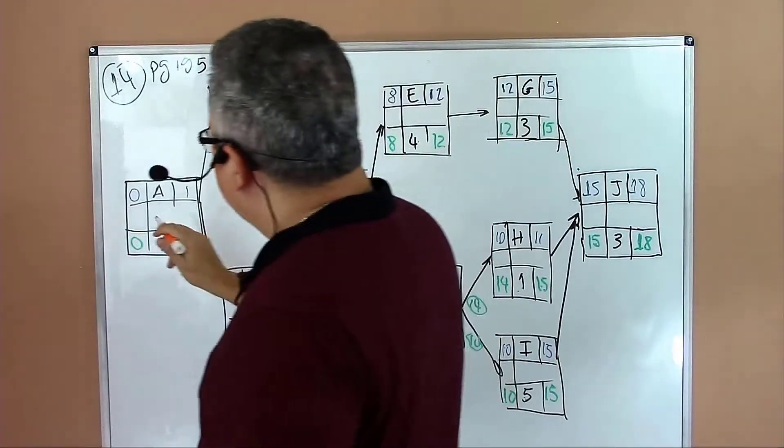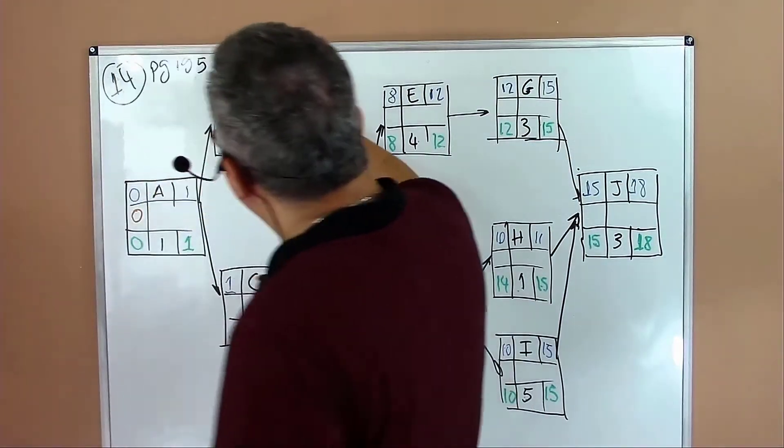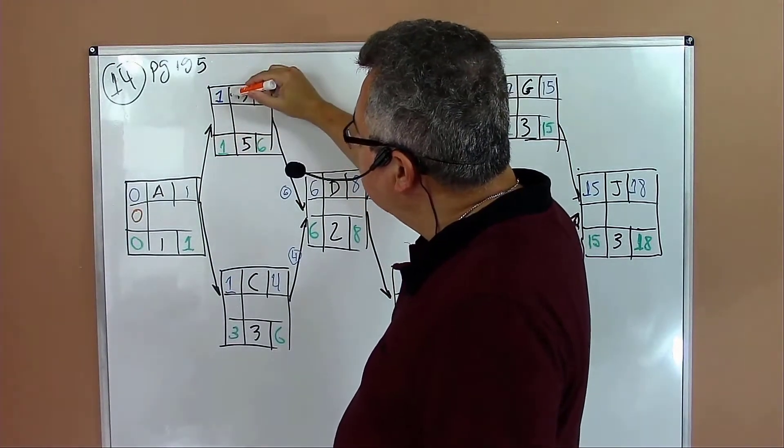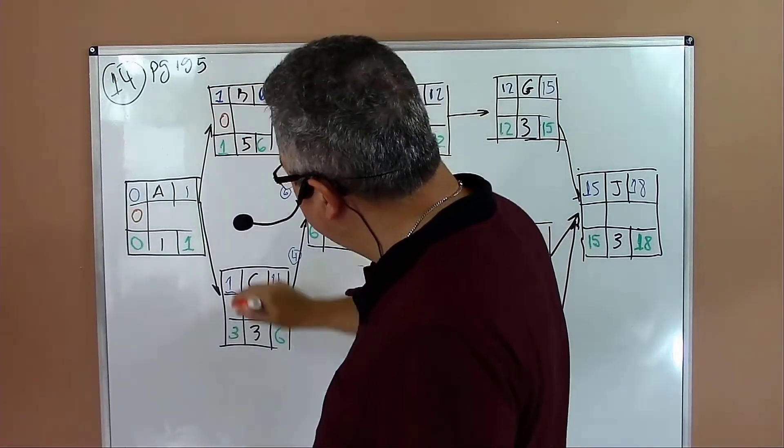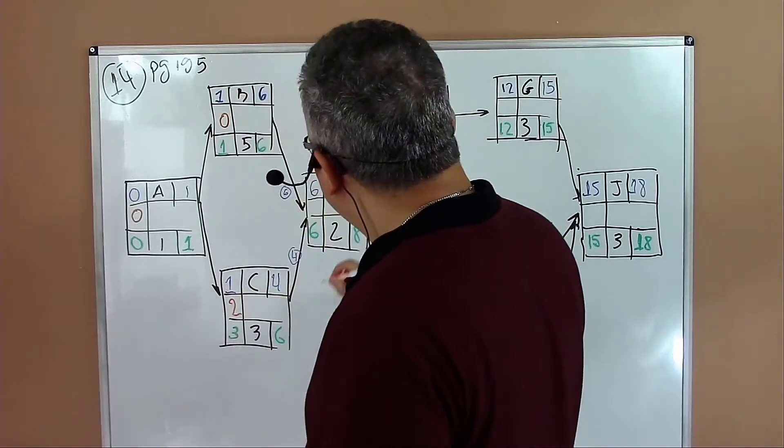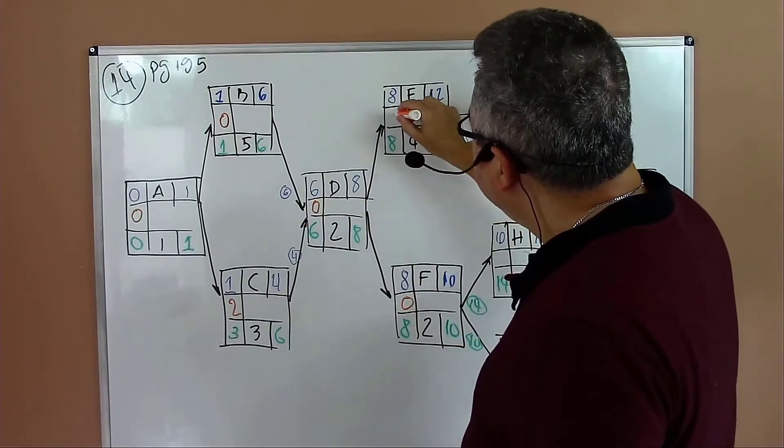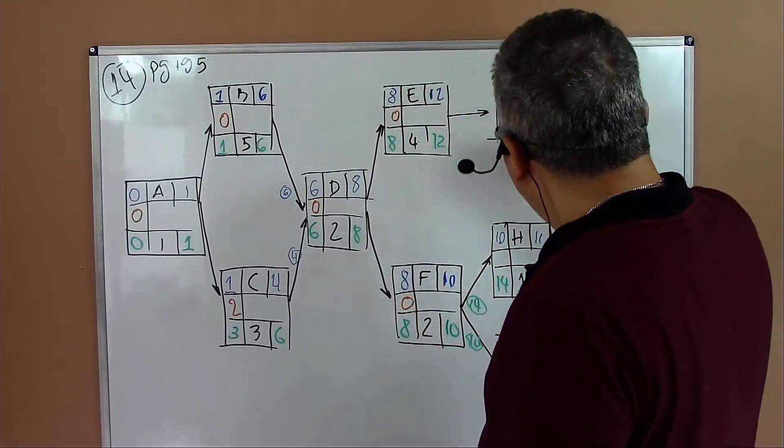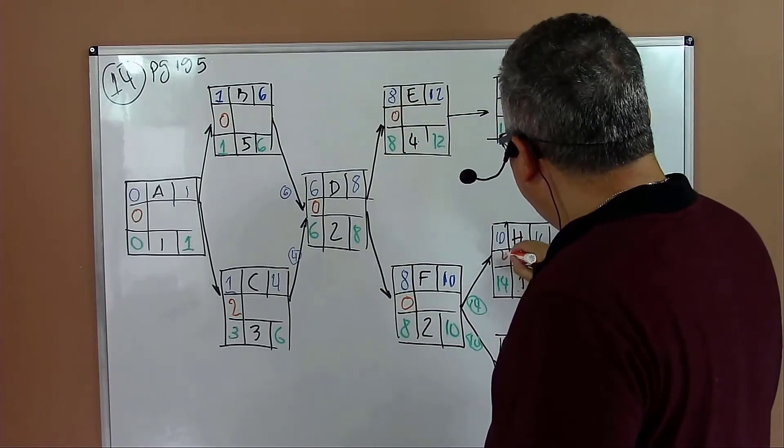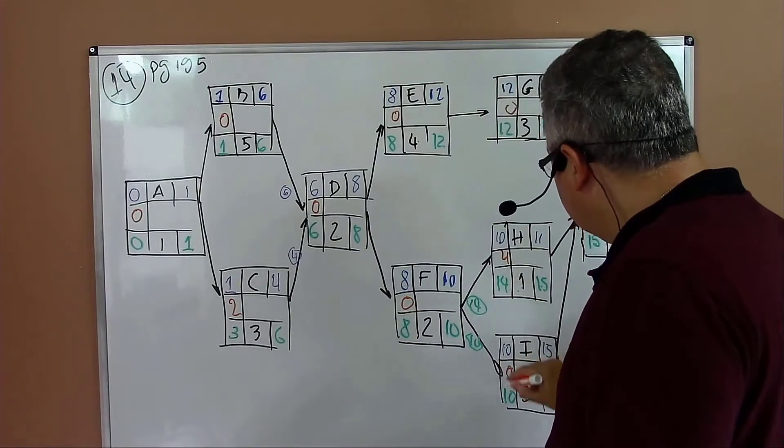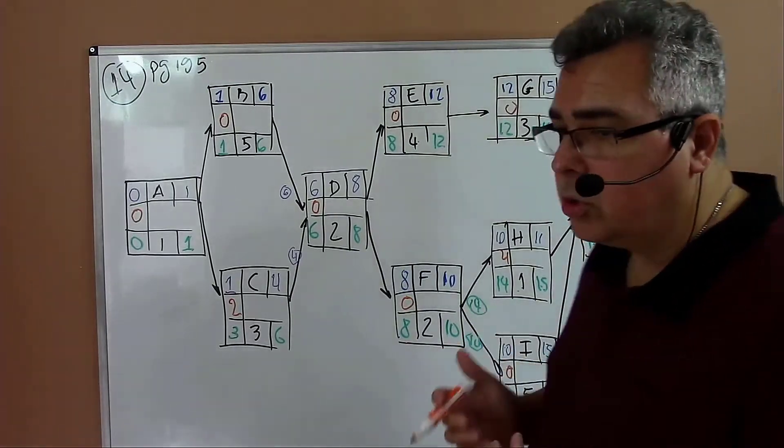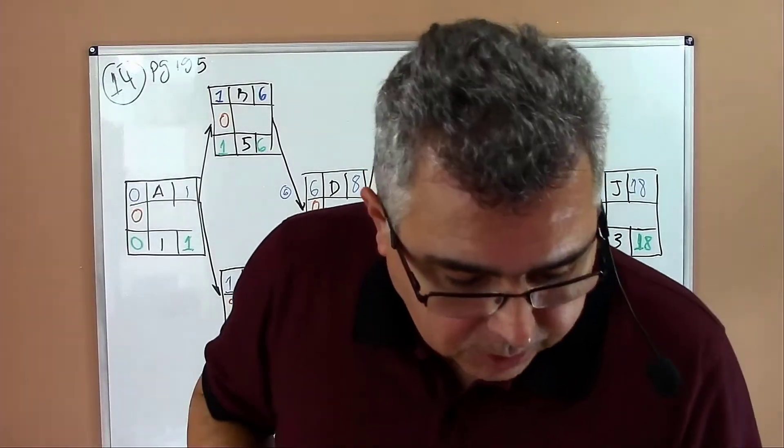Now we have to compute the activity slack. Here we have zero for activity A. The slack is late start minus early start. Zero here for B, two for activity C, zero for activity D, zero for activity F, zero for activity E, four for activity H, zero, zero.